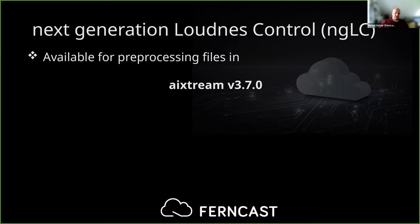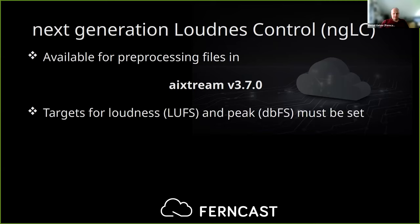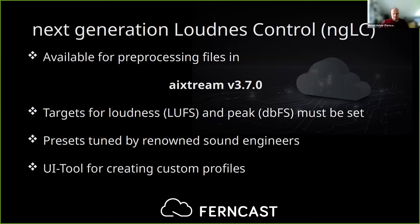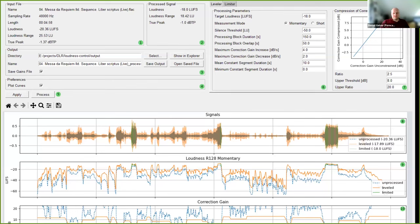The next generation loudness control is available in the next Xtreme version 3.7, and you can pre-process files with it. The user can set a target for loudness and a signal peak, and then select a preset — because the algorithm has loads of parameters, we have reasonable presets tuned with renowned sound engineers. Nevertheless, you can also create your own setups using a UI tool where you can create custom profiles for the loudness control. There you load a file, see its measured loudness, loudness range, and peak, then set targets and other parameters.